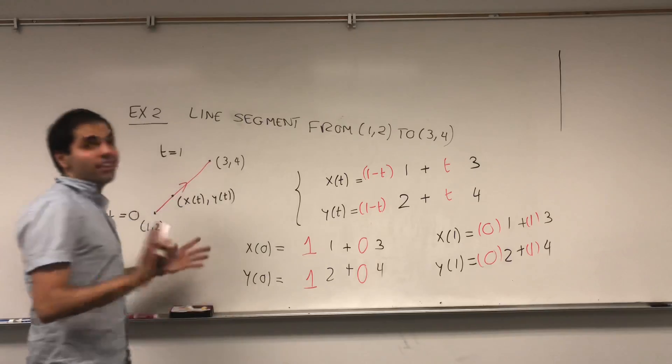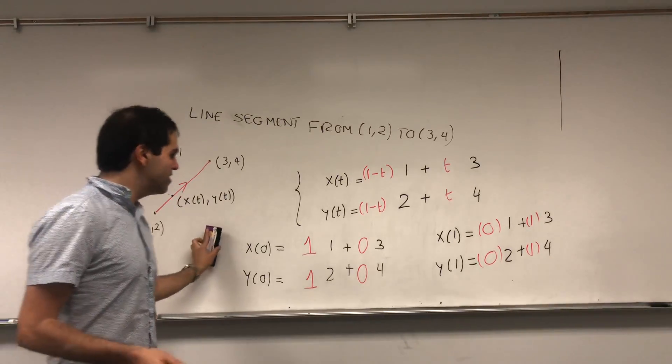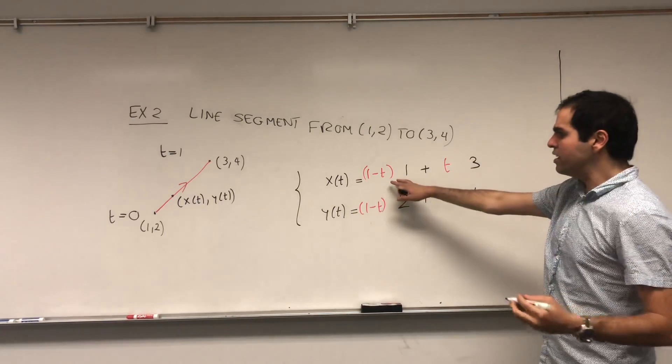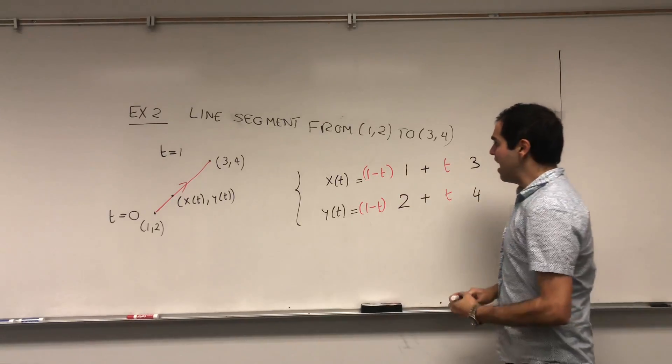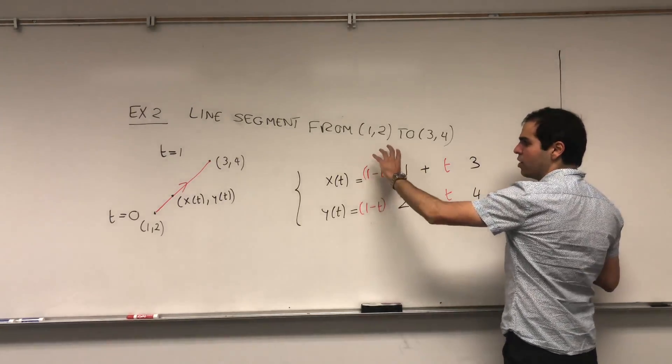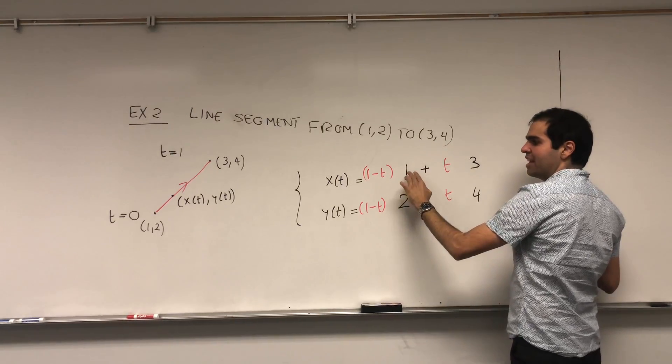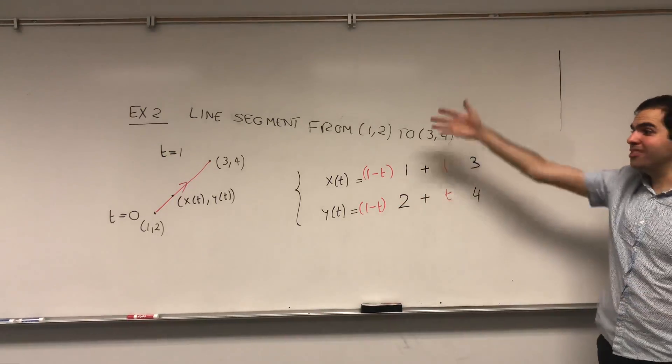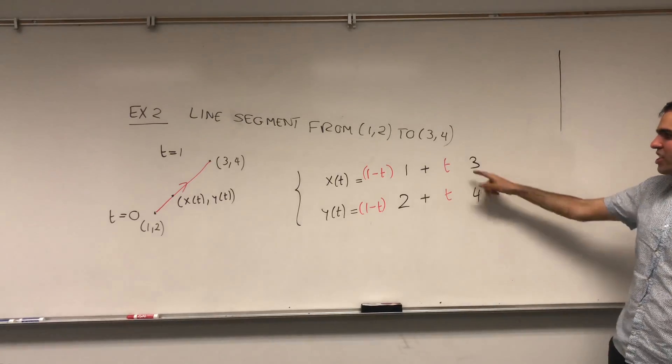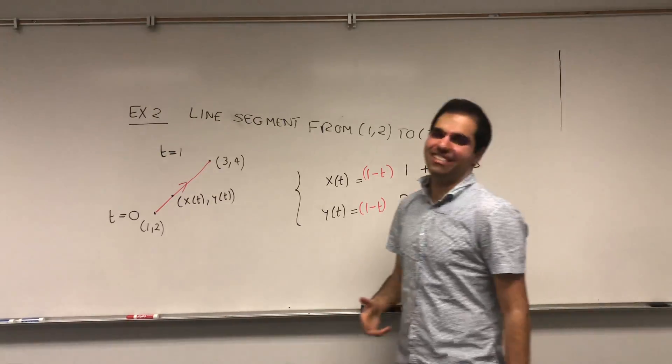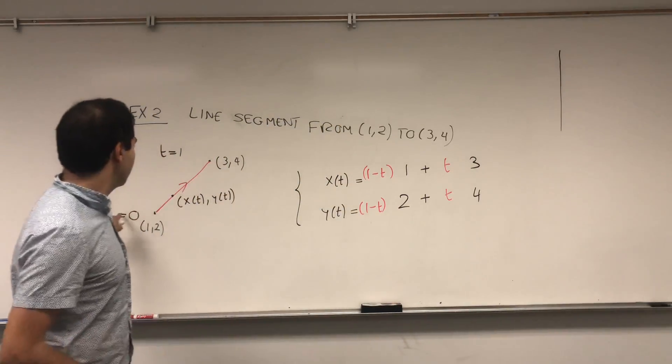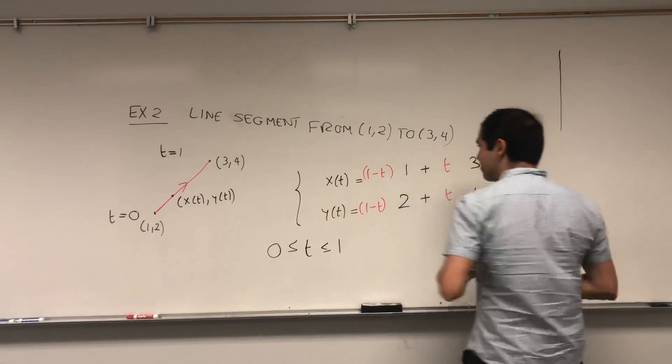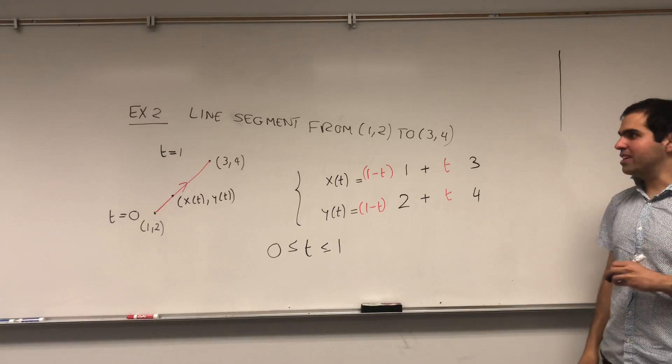So definitely you will debate between t and 1 minus t. The good news is, you can actually easily check your answer, because all you need to do, plug in t equals 0, and you'll see, at 0, this becomes 1 and this becomes 0. So in the end, we get 1 here, and we get 2 here, which gives you precisely the point you want. If you switch this, you would have 3 and 4 at the beginning, which is not what we want. Lastly, again, t is between 0 and 1. Good. So that's the second important parametrization.